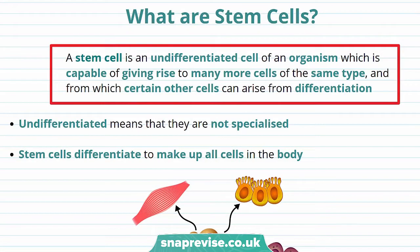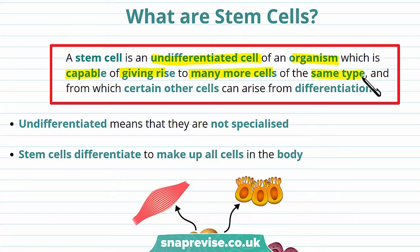In our video on cell differentiation, we talked about the different types of cells. Now we're going to talk about stem cells. The definition of a stem cell is given as an undifferentiated cell of an organism, which is capable of giving rise to many more cells of the same type, and from which certain other cells can arise from differentiation. Don't worry if this sounds a little bit complicated — I'm going to explain what all of this means in this video.